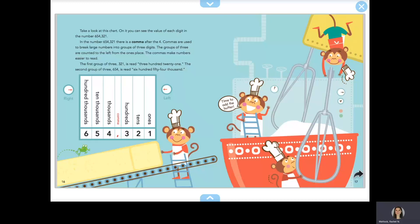Commas are used to break large numbers into groups of 3 digits. The groups of 3 are counted to the left from the ones place. The commas make numbers easier to read. The first group of 3, 321, is read 321. The second group of 3, 654, is read 654,000.